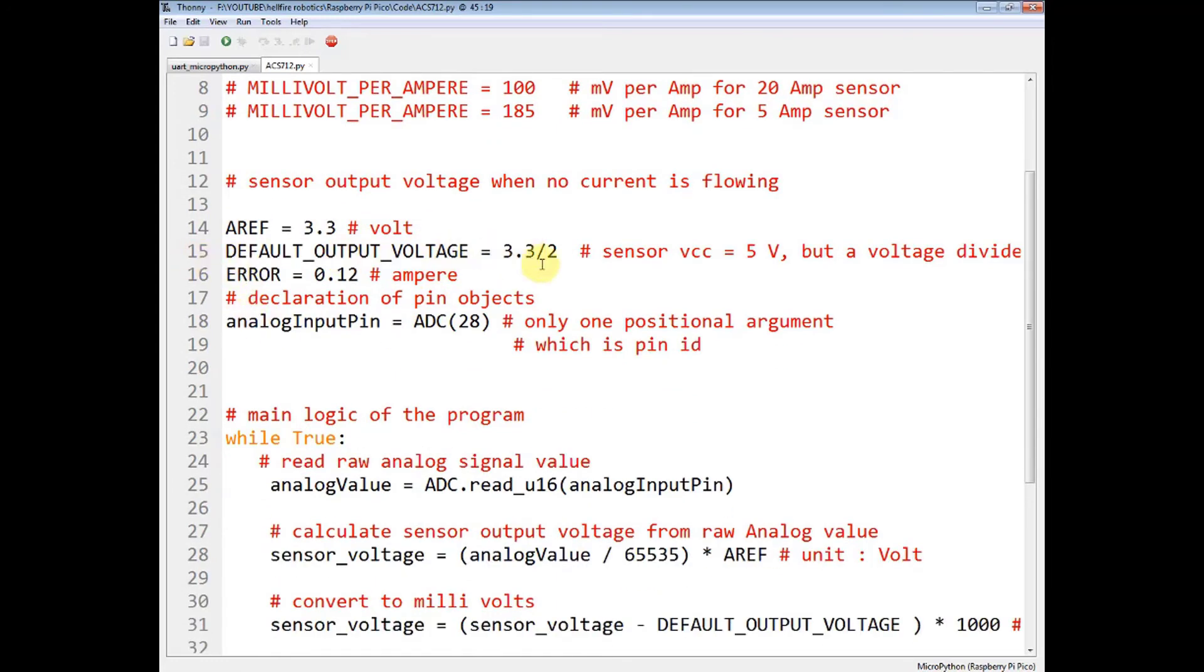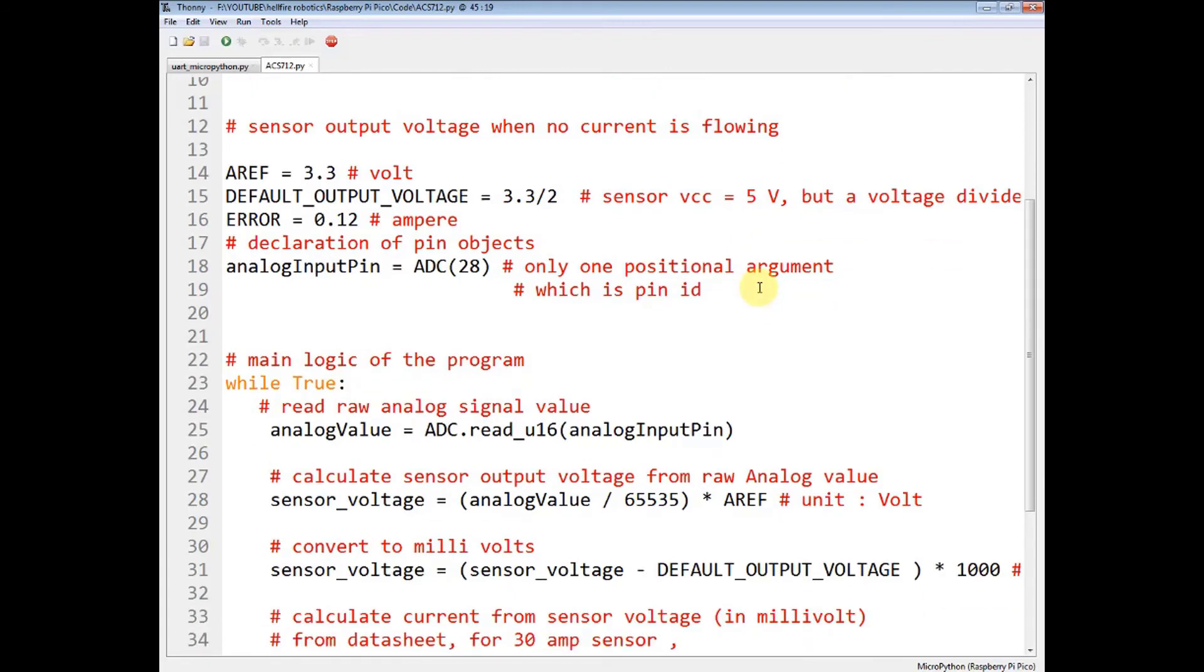Default output voltage is 3.3 divided by 2 because the sensor's VCC is at 5V but a voltage divider is created by the use of an external potentiometer which will give a voltage equal to 1.65V when the sensor's output pin is at 2.5V. So that is like a voltage level converter of 2.5V to 1.65V.